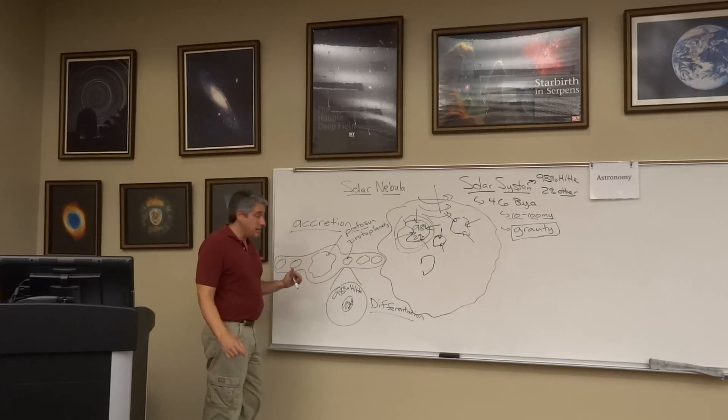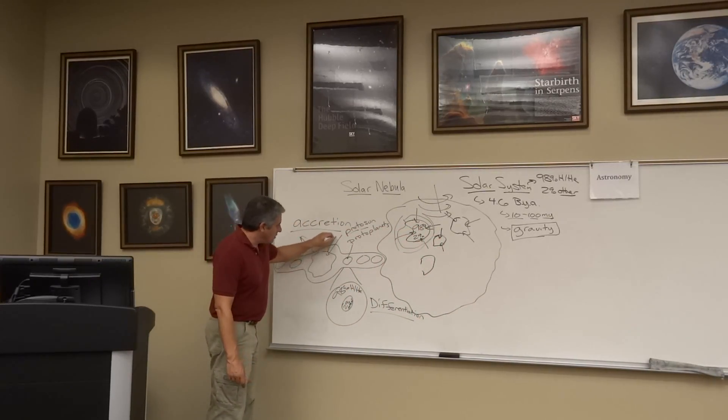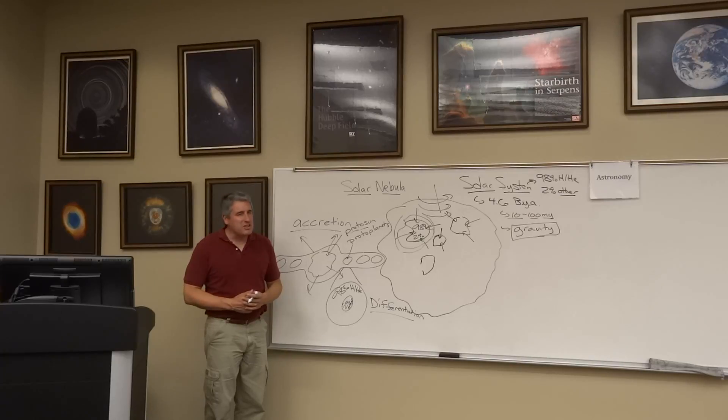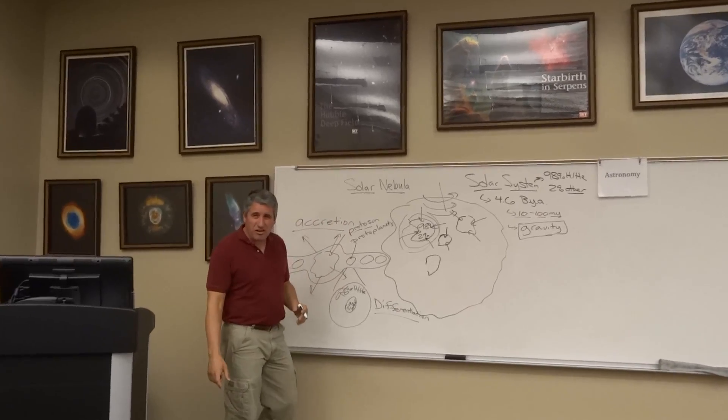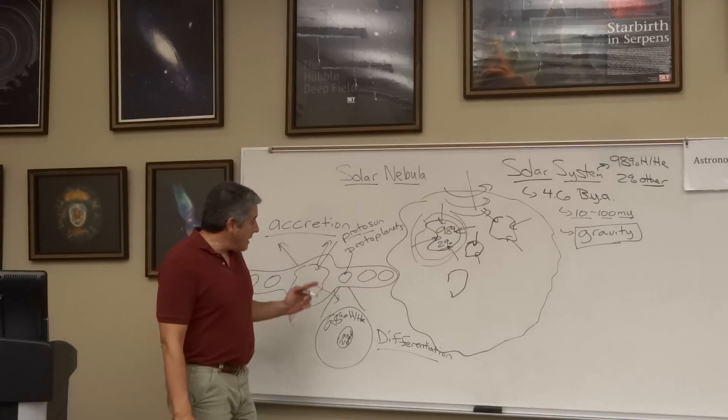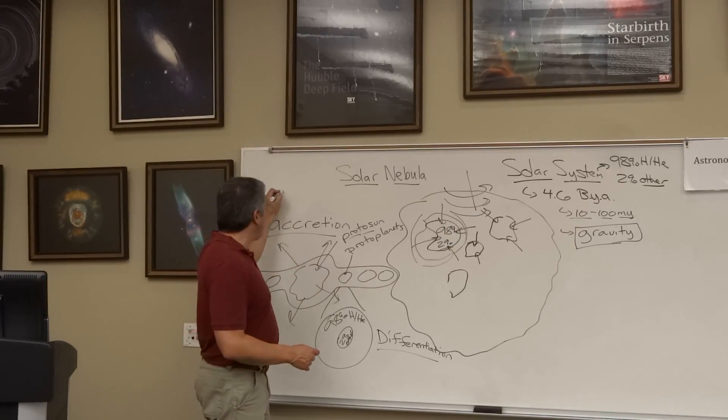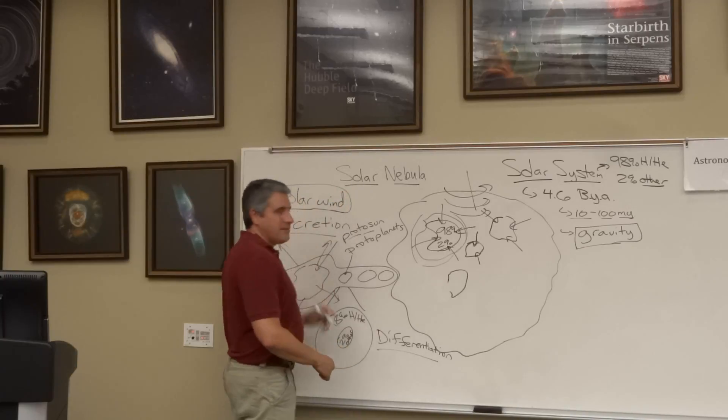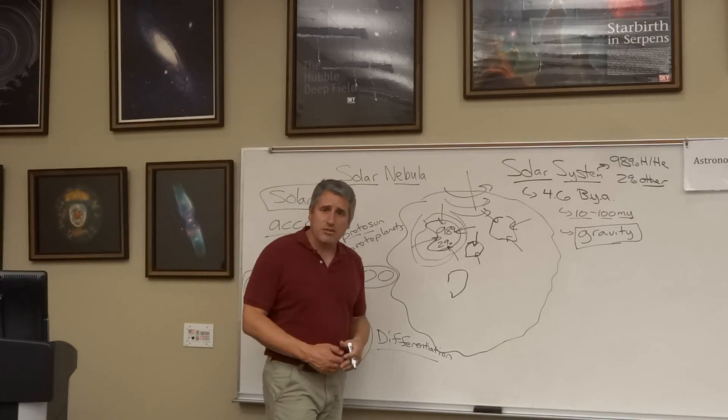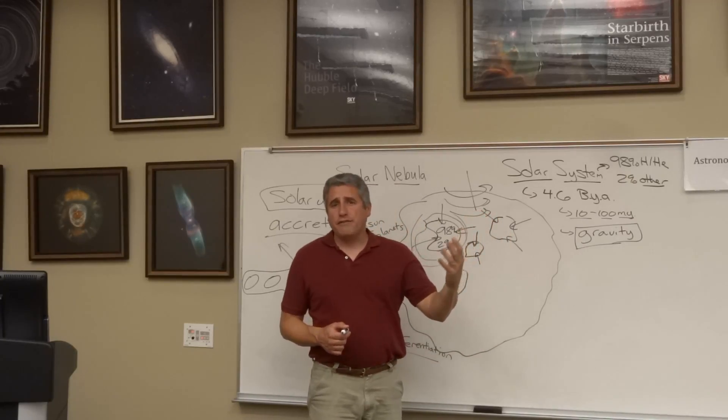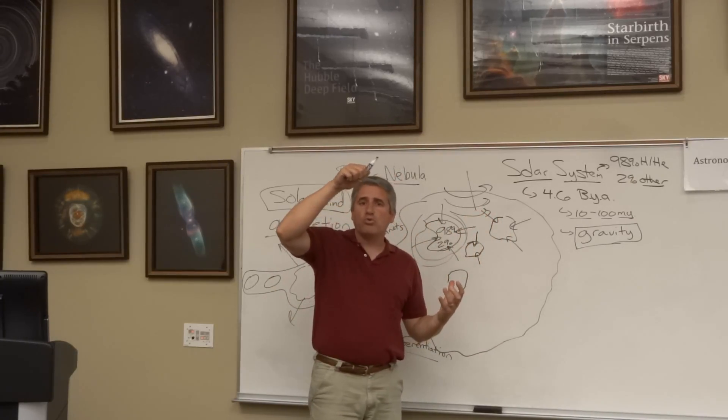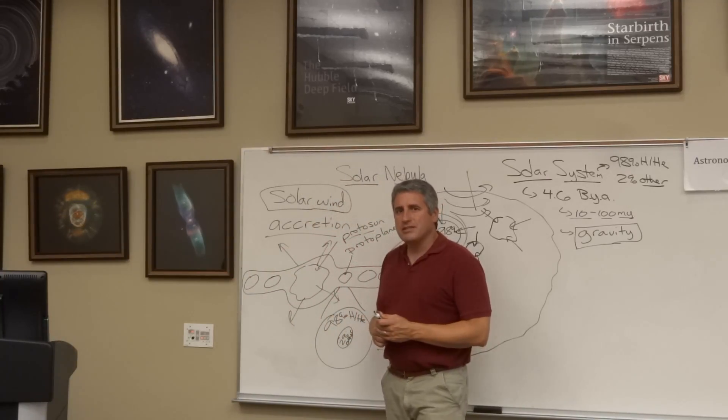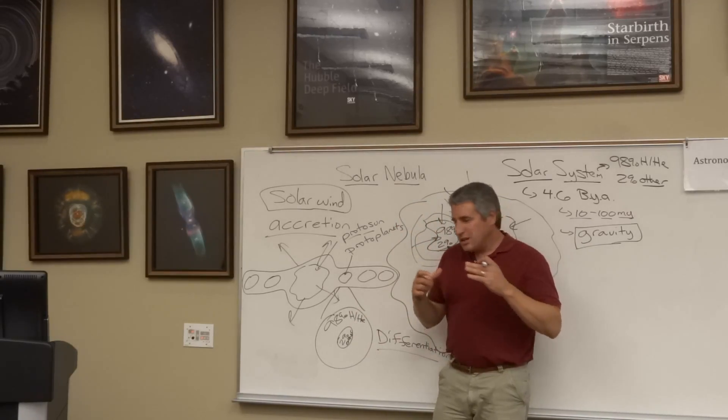This proto-sun ignites. It begins to glow. It produces heat, light, energy, and a stream of charged particles comes racing off the early sun. And that stream of charged particles creates what's called a solar wind. In fact, the solar wind continues even to this day. It is cause, as we'll discuss later, for the solar wind plowing into our magnetic field, channeling to the poles and creating the aurora borealis, the aurora australis, the northern and southern lights.